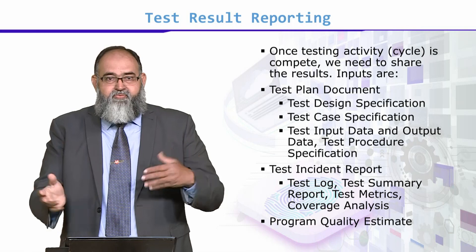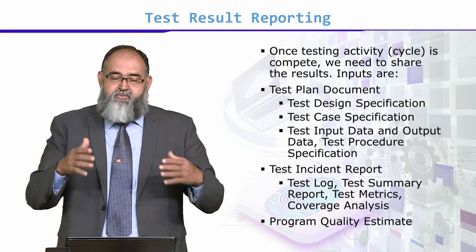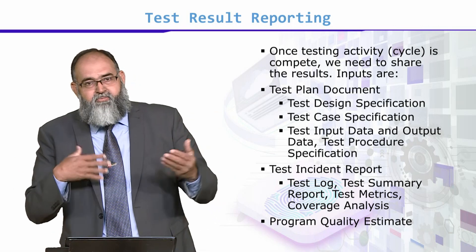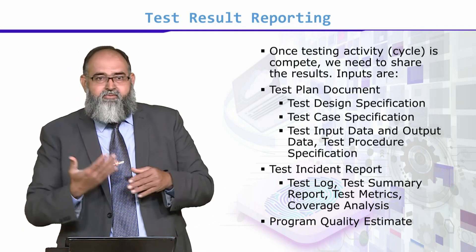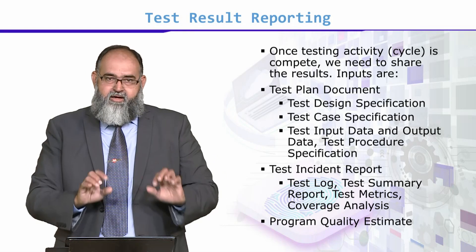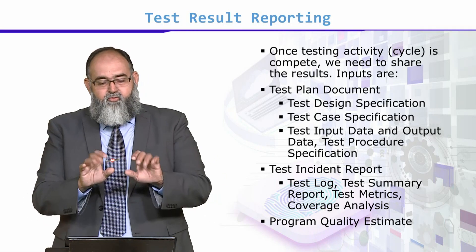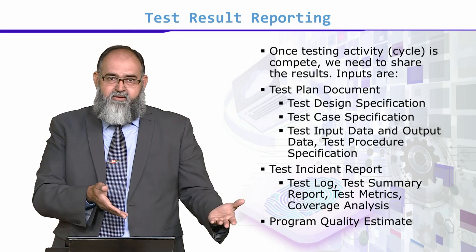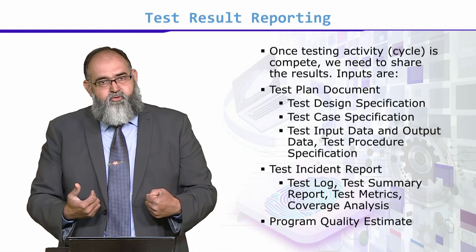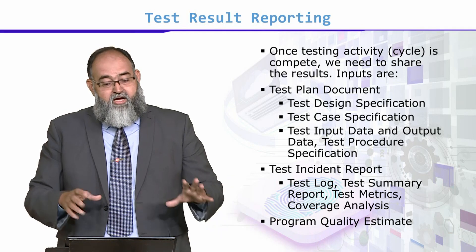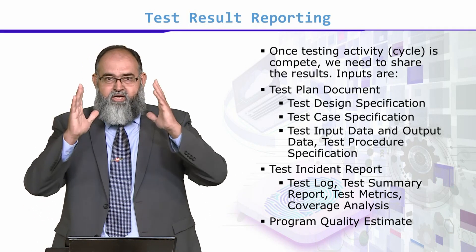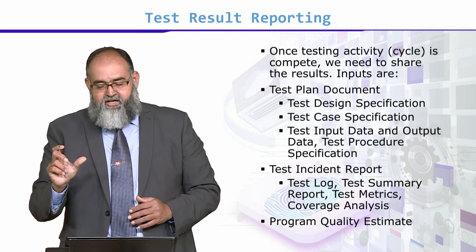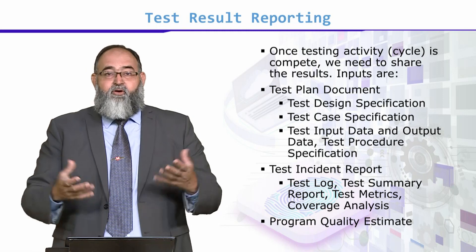But if you consider: 55, then 58, then 59 — you are hovering around the same numbers. This means you can say in a very confident manner that this testing activity is reflecting the quality of your testing and the product is not stabilizing.